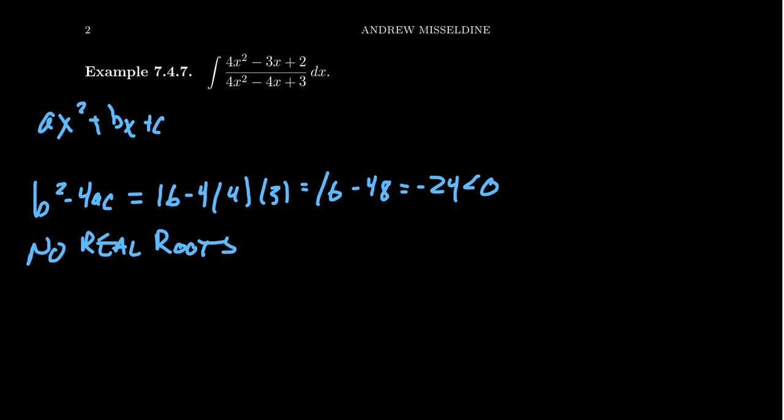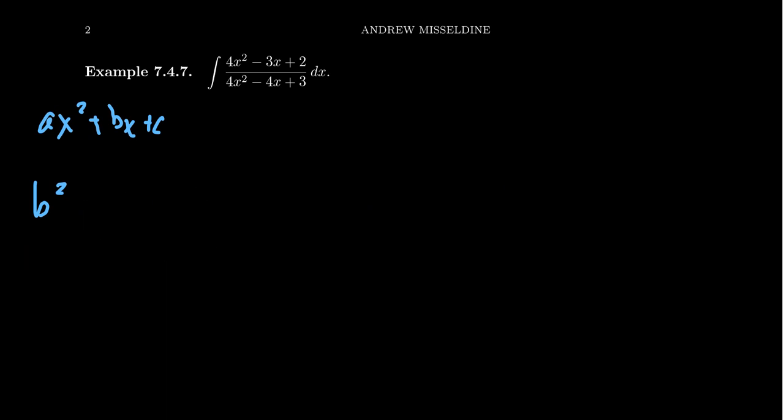So how do we proceed from something like this? Well, the first thing to notice is that even though there's an irreducible quadratic on the bottom, it is an improper fraction. Looking at the leading terms, you have 4x squared over 4x squared. That's the same power. We could reduce this down a little bit. We want a proper fraction.